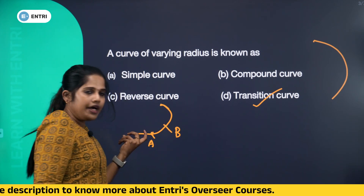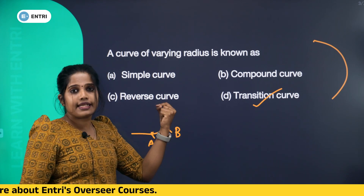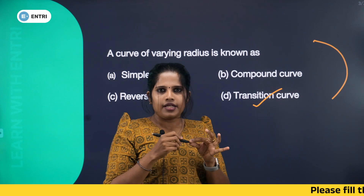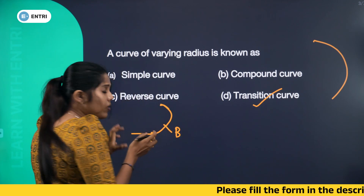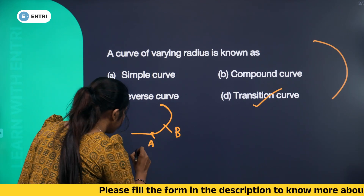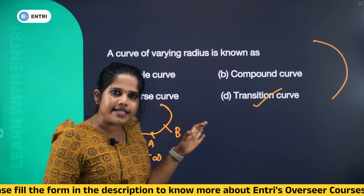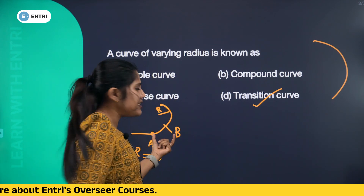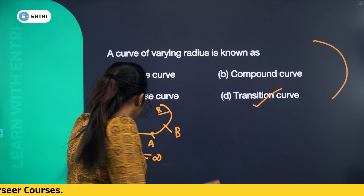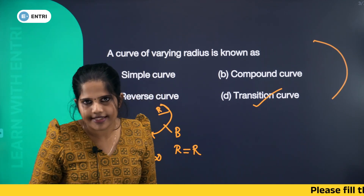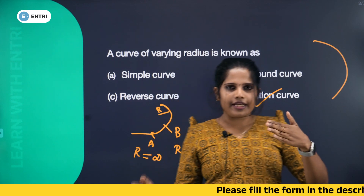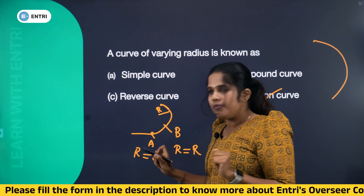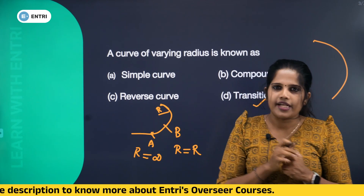In the starting point, the transition curve is connected to the straight line — the straight line has radius infinity. In the ending point, the transition curve is connected to the circular curve. Suppose the radius of the circular curve is capital R. In the end, the transition curve radius equals the radius R of the connected circular curve.